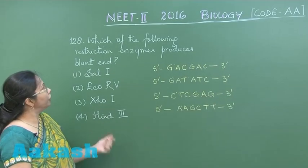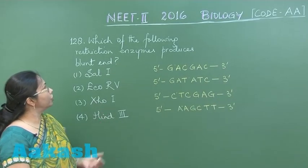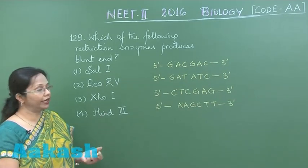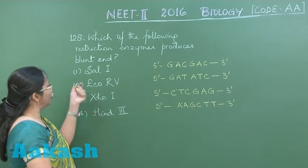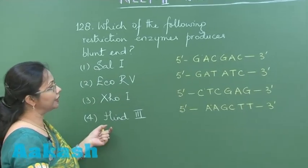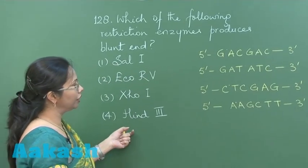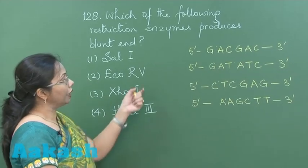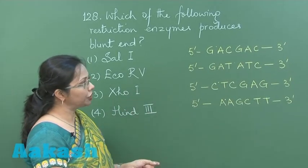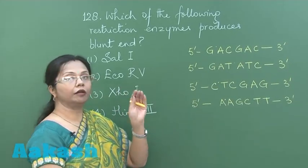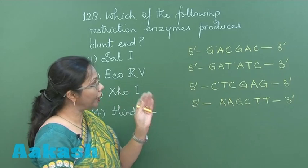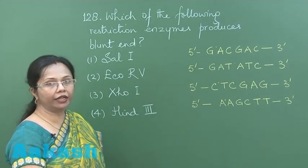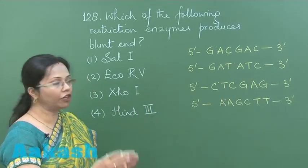In this question, we have to find out the restriction enzyme which produces blunt ends. For the four restriction enzymes mentioned here, these are their restriction sites. If in the restriction site the phosphodiester bond is cut away from the center, there would be staggered ends or flush ends.